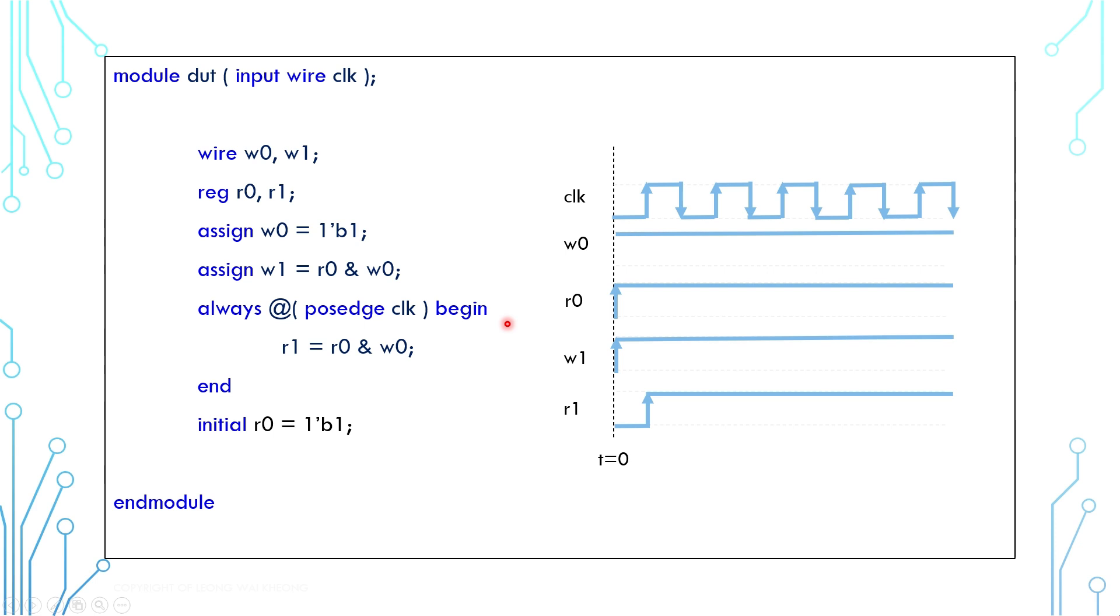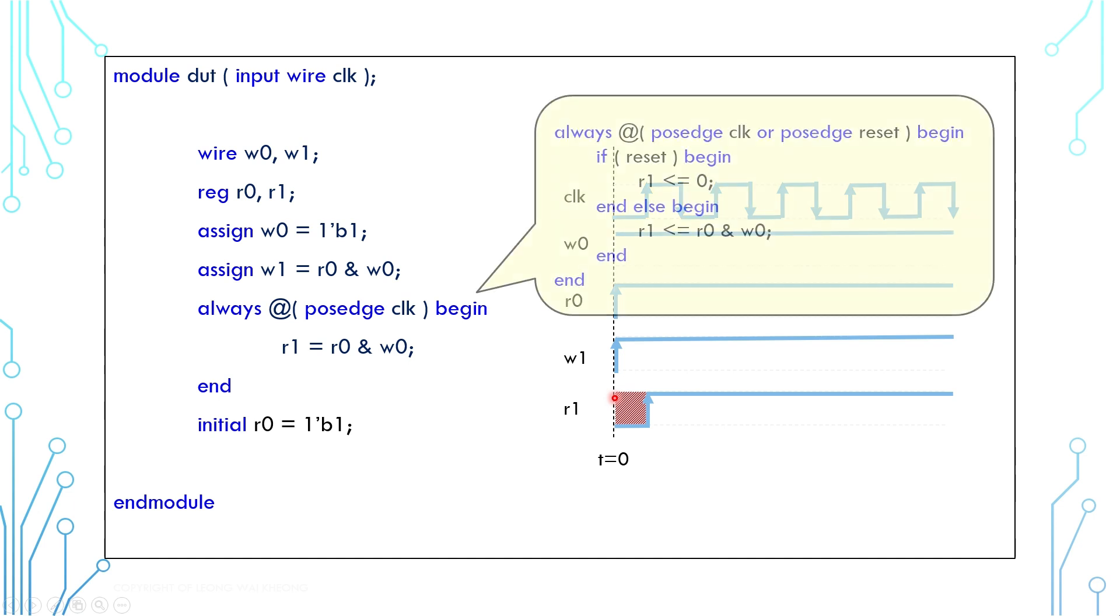Before we proceed, you should know that this code and illustration is incomplete. For example, we do not know the value of R1 at the beginning because it was not initialized, unlike W0 and R0. Up until the first clock, R1 was unknown. A proper way is to initialize a design by using reset. The reset code is not used in the original example here because I was trying to avoid the font being too small.